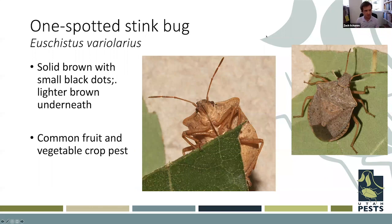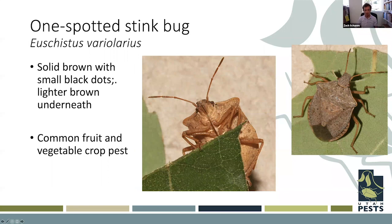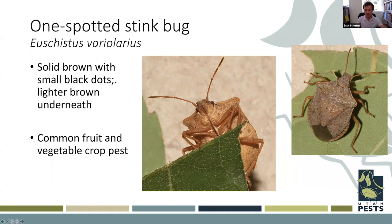The one-spotted stink bug, Euschistus variolarius, is probably one of the most common stink bugs in the Mountain West. It's a larger, pretty much solid brown stink bug with some black mottling or spots and typically lighter underneath. We don't really think this one will cause any economic concerns, but it's very common and you'll frequently find it in your field or home garden. We'll discuss another solid brown species shortly and explain how to tell the two apart.